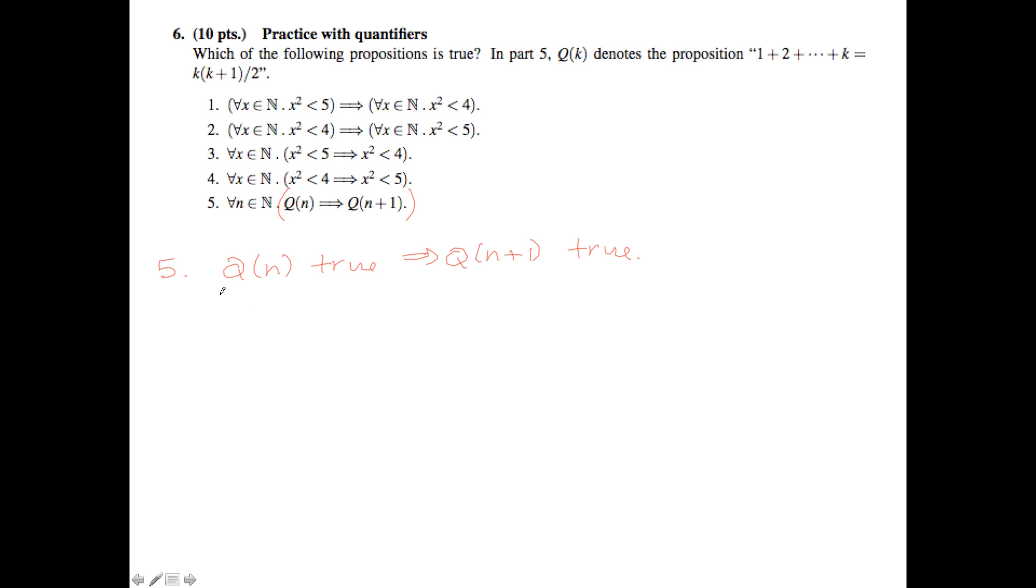So if we know that Q of n is true, then we know that 1 plus 2 plus everything up until n equals n times n plus 1 over 2. Then let's add n plus 1 to both sides. So we get 1 plus 2 plus dot dot dot plus n plus n plus 1 equals n times n plus 1 over 2 plus n plus 1.